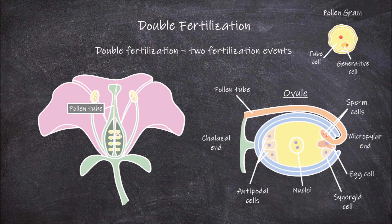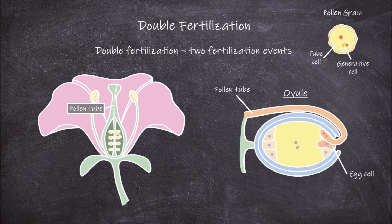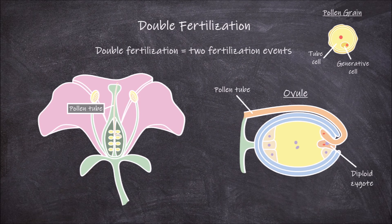And this is where the double fertilization takes place. One of the haploid sperm fuses with the haploid egg cell to form a diploid zygote. But a second fertilization event occurs: the second haploid sperm fuses with the two haploid polar nuclei to form the triploid endosperm, which provides the nutrition for the growing embryo. The rest of the cells in the embryo sac degenerate.